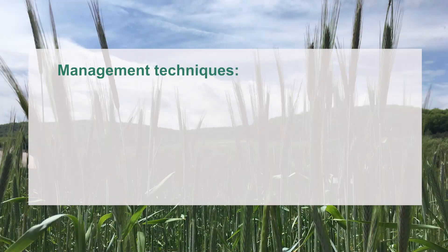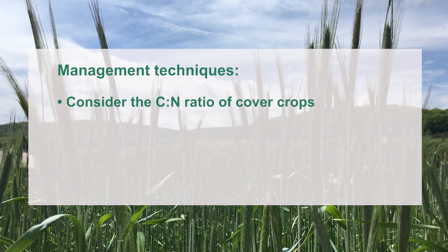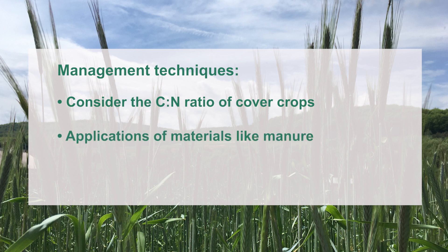There are many management techniques we can use in our soils that can promote the mineralization of nitrogen throughout the growing season of corn and other commodities. First, it's important to consider the carbon to nitrogen ratio of cover crops when they're terminated. Certain cover crops, like cereal rye, have the potential to immobilize nitrogen if they're terminated at a late and highly mature stage. Applications of materials like manure can contain a significant amount of organic nitrogen. The residual organic nitrogen content of manure from previous years of applications can be a significant source of additional mineralized nitrogen and should be accounted for in cropping plans.